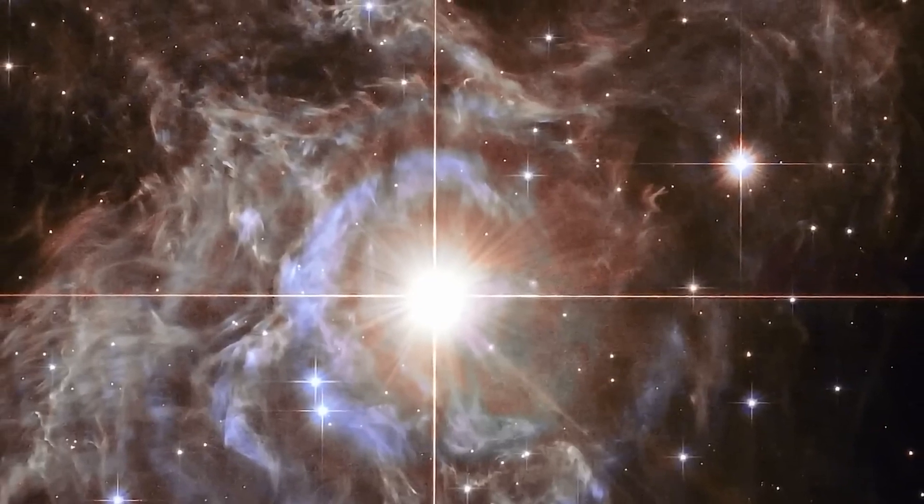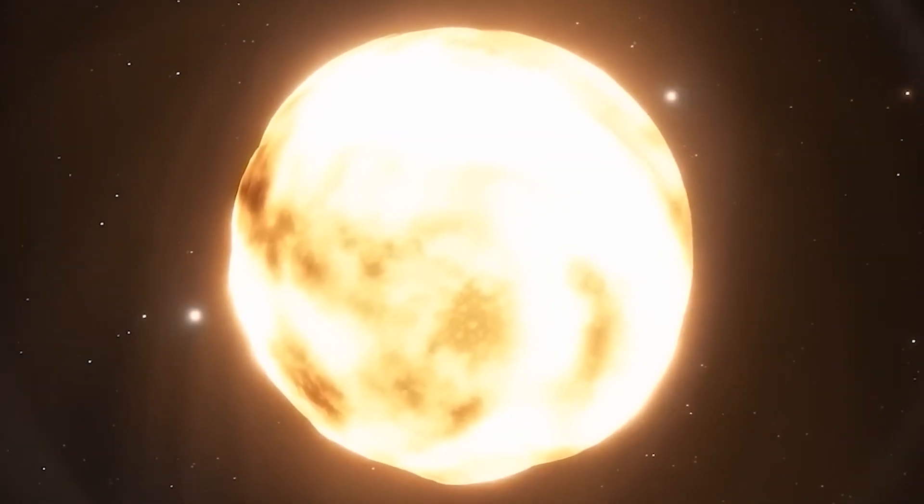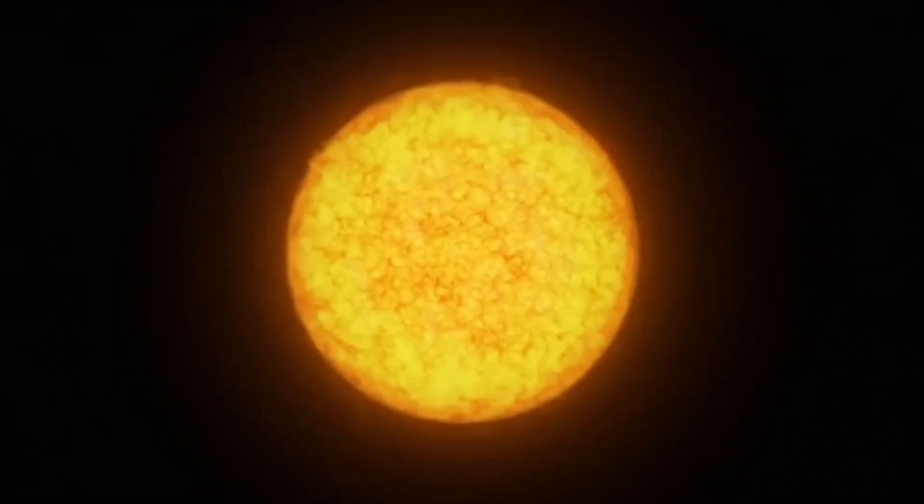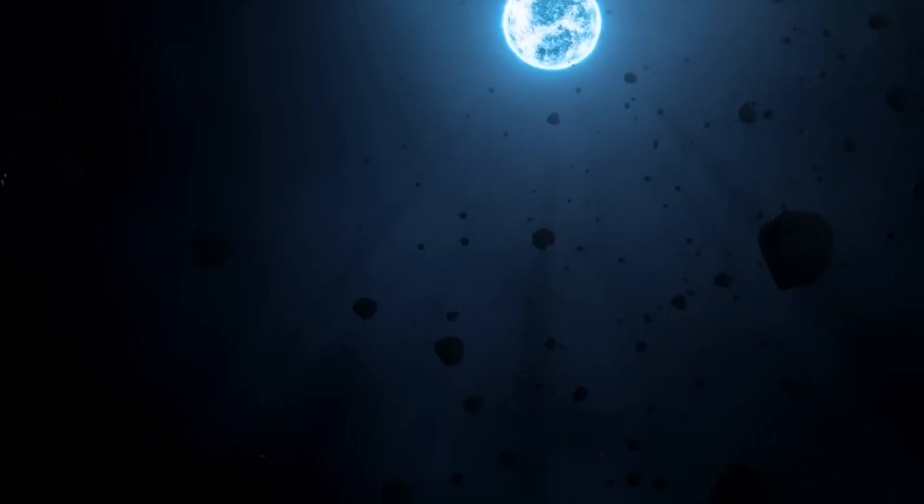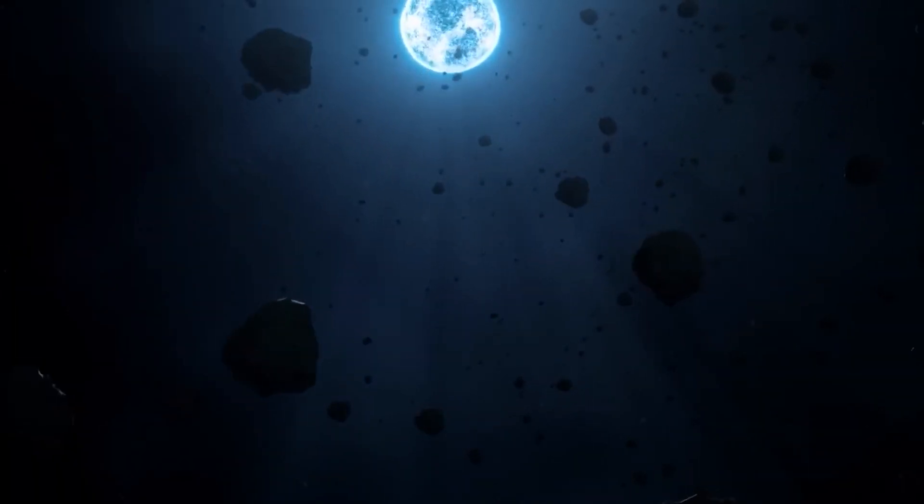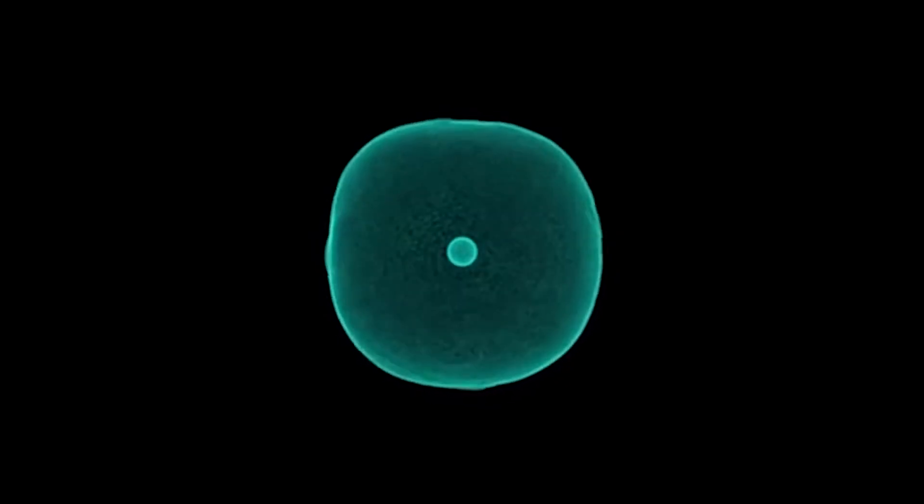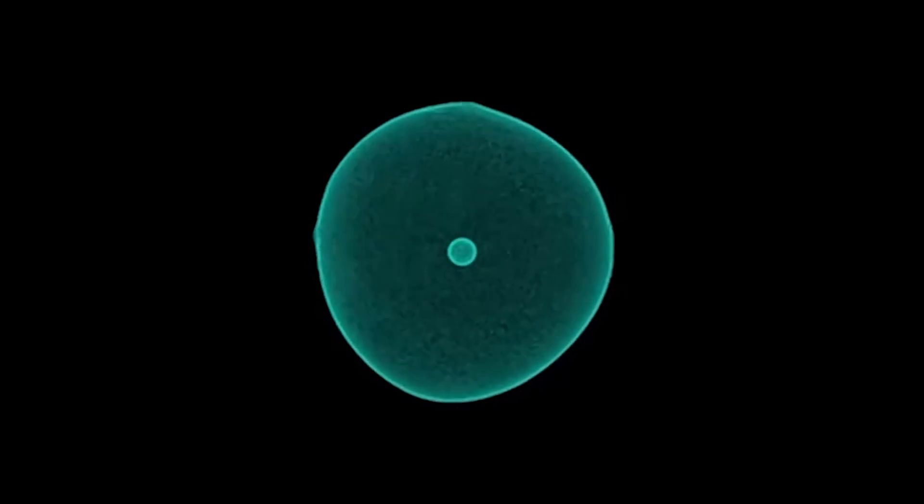This phase sees a dramatic increase in energy output before reaching a catastrophic explosion. If Polaris were to experience a supernova, we would surely witness an amazing event in our sky. The star would become incredibly luminous, eclipsing even the brilliance of the moon and becoming one of the brightest objects in the night sky. This luminous spectacle could last for days, weeks, or even months.